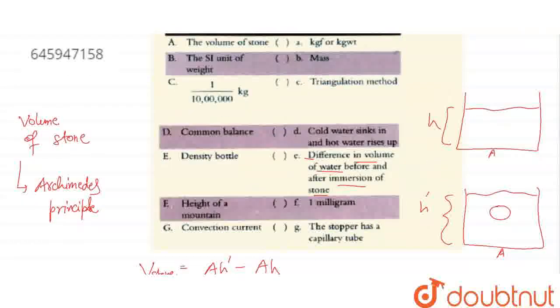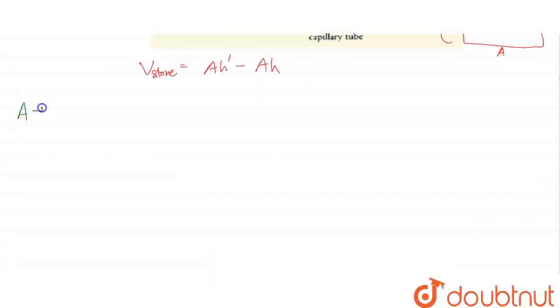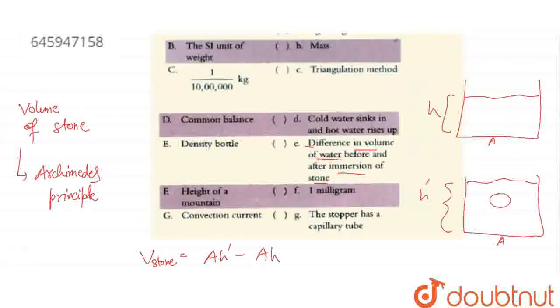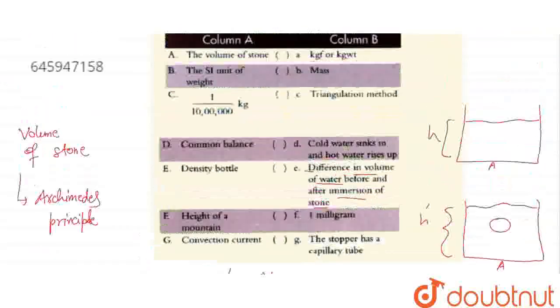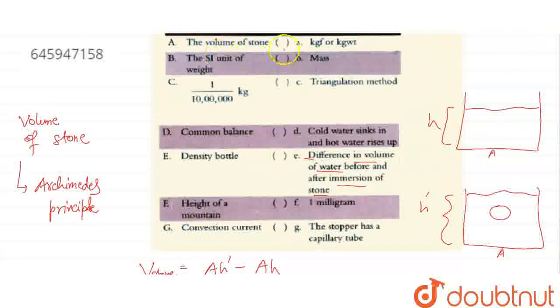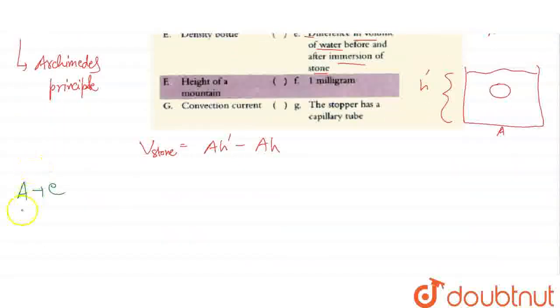So A's answer I'm writing here on this side. A, I am getting as I. Next, the SI unit of weight - weight's SI unit is kg, so B I am getting as E.